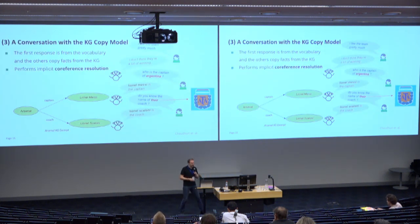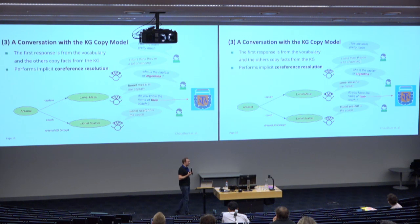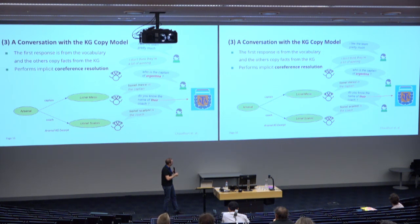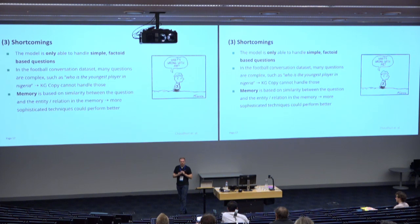Here is a brief example conversation with our system about Argentina. The user says 'I like the team pretty much.' The system responds something like 'I don't think there are a lot of winning' — we see a grammatical mistake, which happens due to relatively limited training data. When the user asks 'Who is the captain of Argentina?' the system correctly responds by copying from a triple in the knowledge graph. If the user further asks 'Do you know the name of their coach?' the system again correctly responds, and actually performs implicit coreference resolution by detecting the reference is to Argentina.